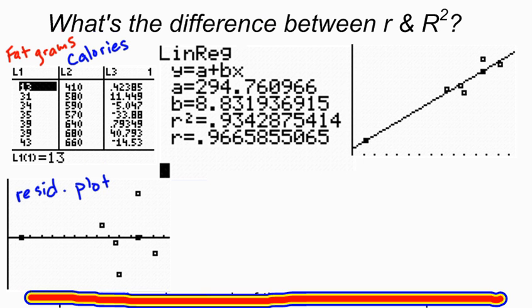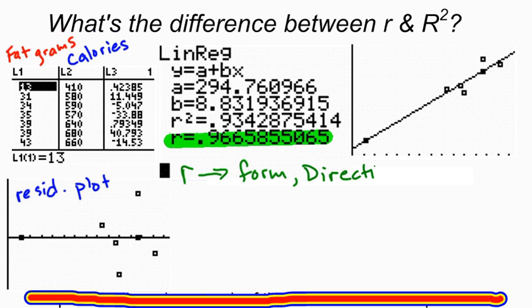Because when you do your linear regression, you've got two values here. You've got R, and if we remember, R is our correlation coefficient. And R tells us the form of the regression. And in this case, we're looking at a linear form. It also gives us direction. If it's positive, then we have a positive association. If it's negative, if R is negative, it gives us a negative association.